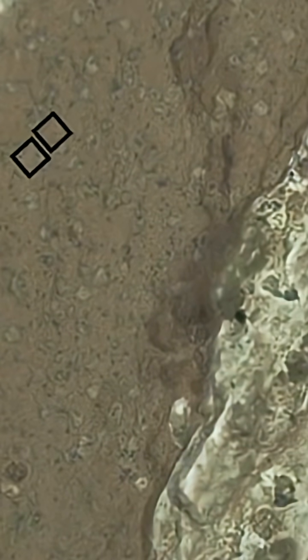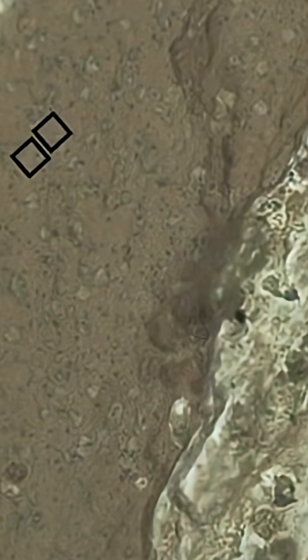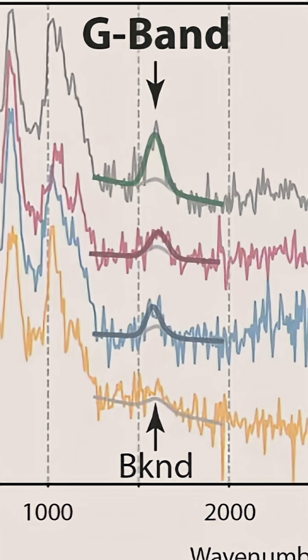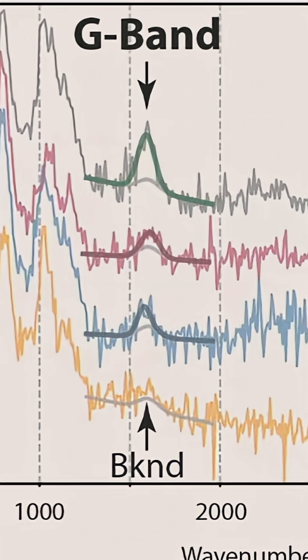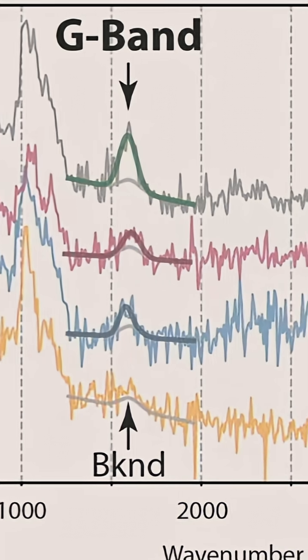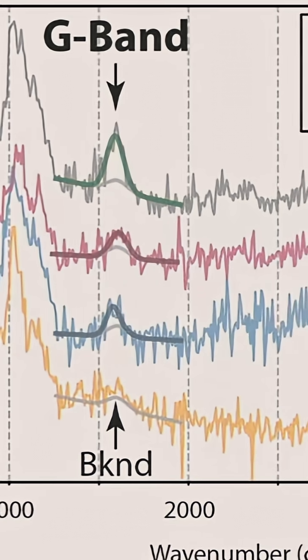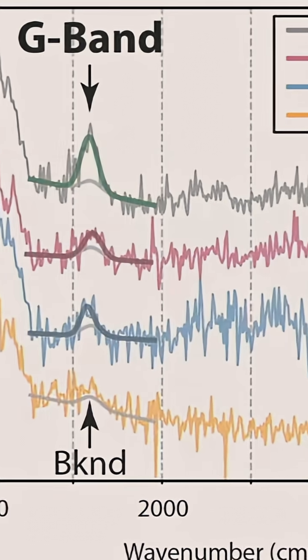These textural features told us that something really interesting had happened in these rocks. Some chemical reactions occurred. But the key thing to take note of is the fact that what we see in these spectra is something called a G-band, and that's pointed out on the image. The G-band for us is a smoking gun indicator for the presence of organic matter in this mud.